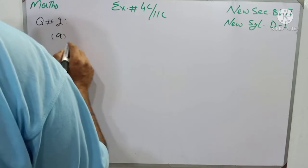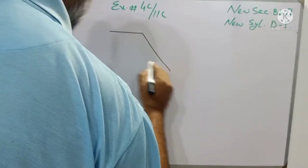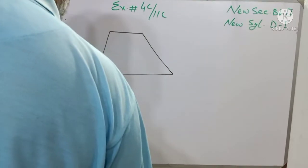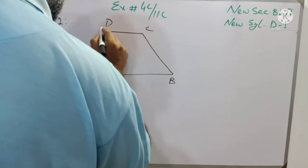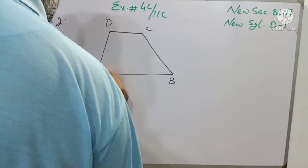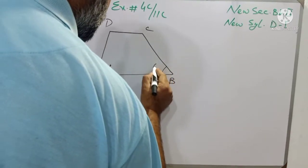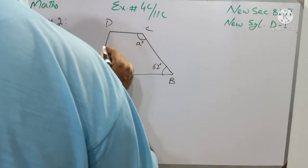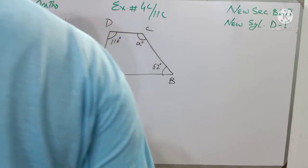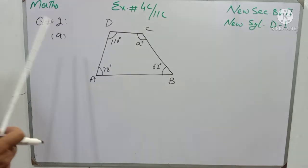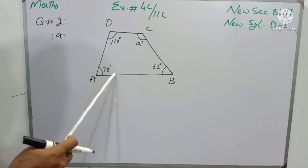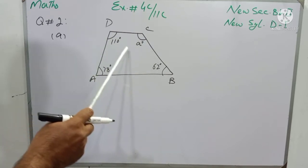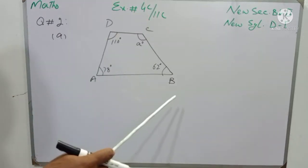Part A is a quadrilateral with vertices A, B, C, D. The given angles are: angle A = 78 degrees, angle B = 62 degrees, angle C = a degrees (the unknown to find), and angle D = 110 degrees. First, we count the sides of this figure — it is a quadrilateral, meaning there are 4 sides. So the sum of interior angles formula applies with n = 4.